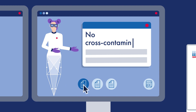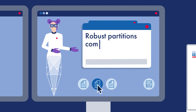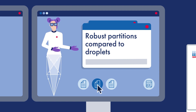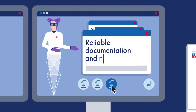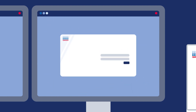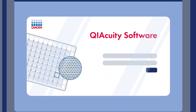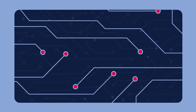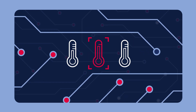Fixed and sealed nanoplate partitions to avoid cross-contamination. Robustness of partitions towards, for example, detergents, compared to droplets. User-friendly software features for reliable documentation and reporting — for example, the latest KayaQuiti software introduces the functionality of a temperature gradient, allowing you to determine the precise temperature at which your experiment should run.